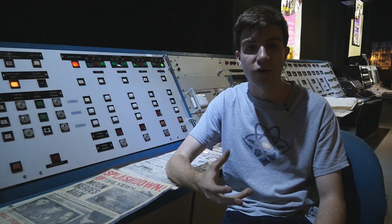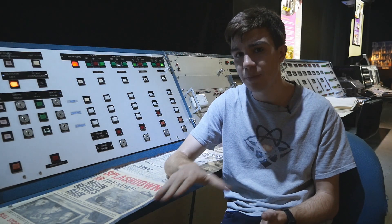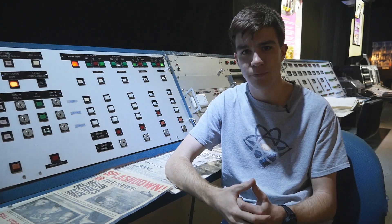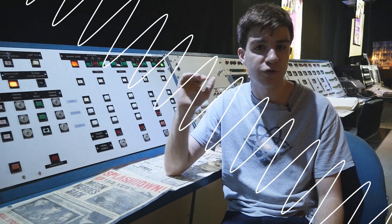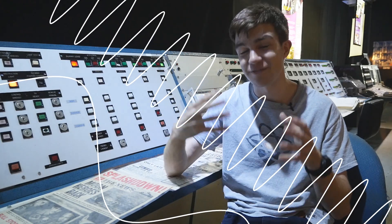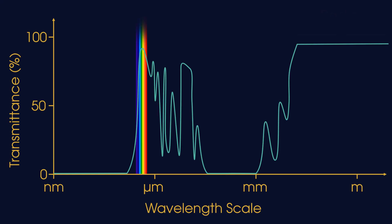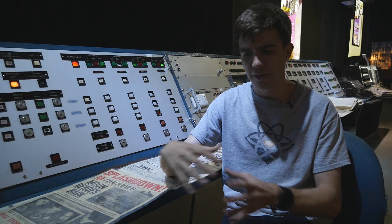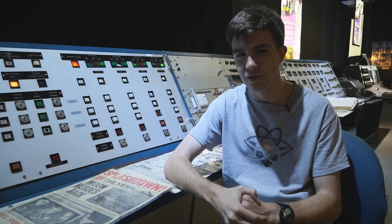We talk to spacecraft using radio waves, which inhabit the lowest energy part of the electromagnetic spectrum. Where visible light has a wavelength of a few hundred nanometres, radio waves have wavelengths of 7cm. We use this particular part of the spectrum because it's long enough to travel through the atmosphere with minimal interference, but at the same time it's short enough to still contain lots of important information.